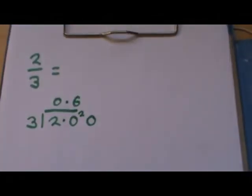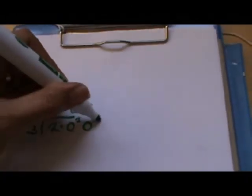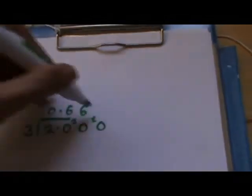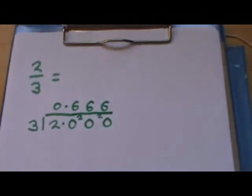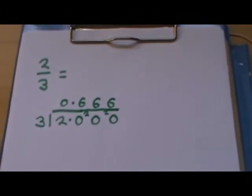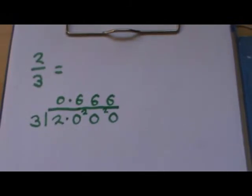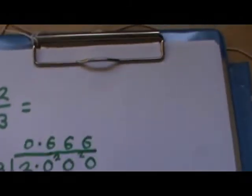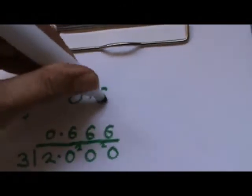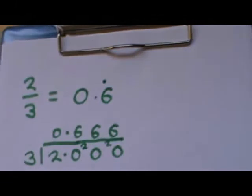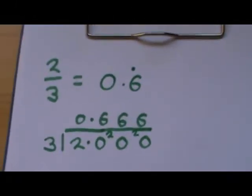So now we've got threes into 20 again, which go six, remainder two. We've got a zero. Threes into 20 go six, remainder two. And so that will continue. So we say that two thirds is 0.6 recurring. We can write that like this. Put a dot above the six to show that it recurs. It goes on forever.